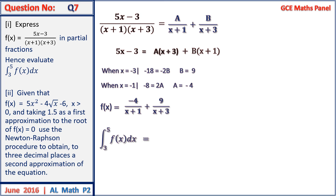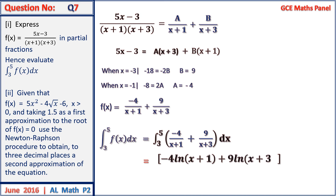Evaluating the integral using the partial fractions result, the integral becomes minus 4 ln of absolute value of x plus 1 plus 9 ln of absolute value of x plus 3. Note: absolute value signs are required because the logarithm would be undefined if the argument equals 0. This integral evaluates to 0.967 to 3 decimal places.